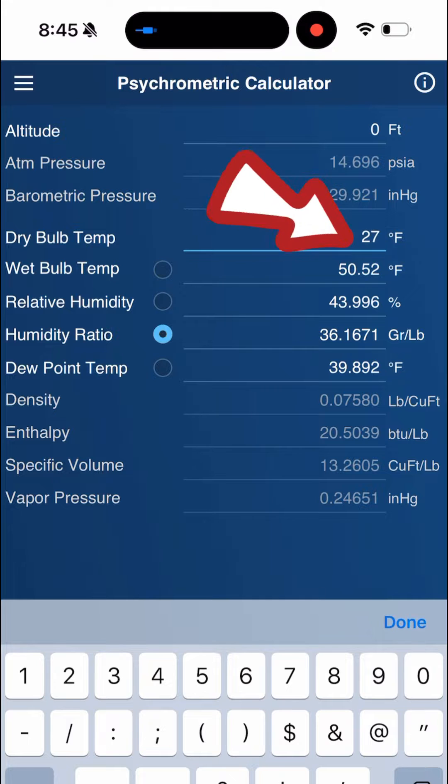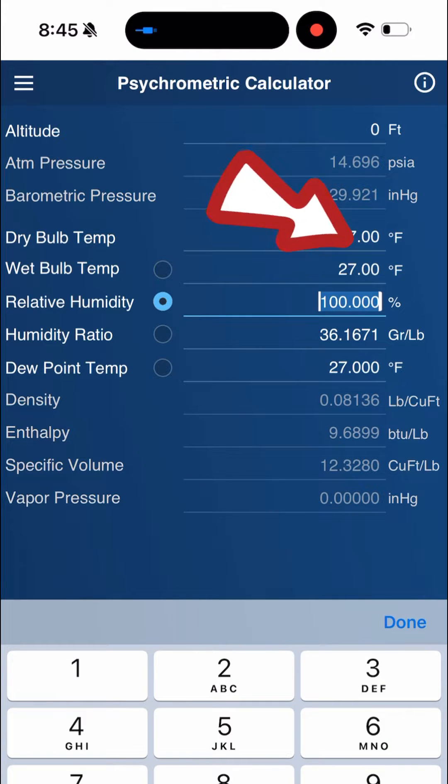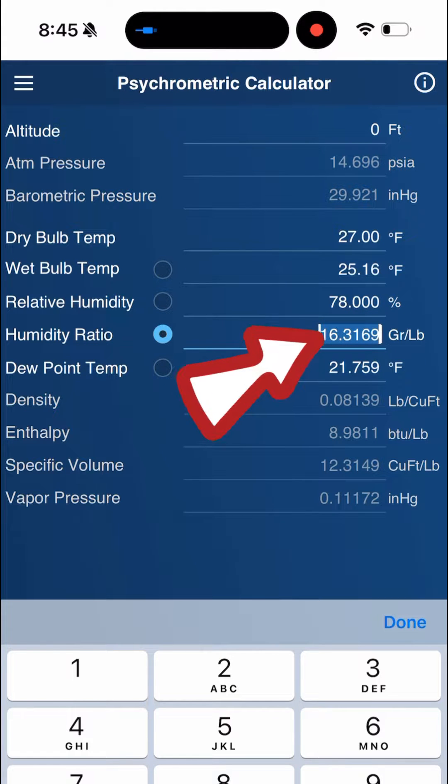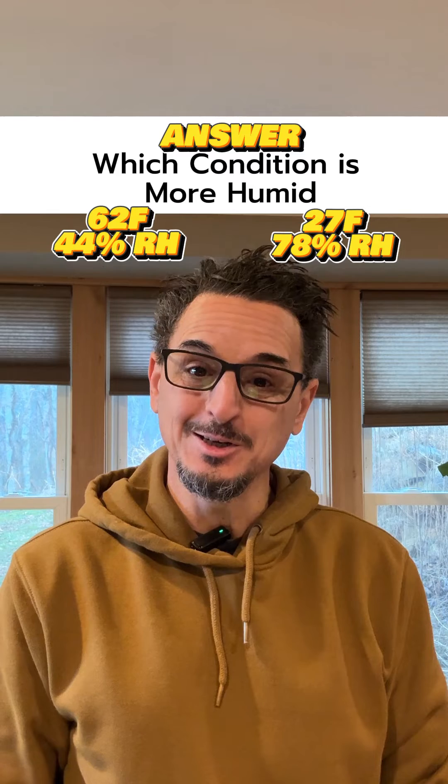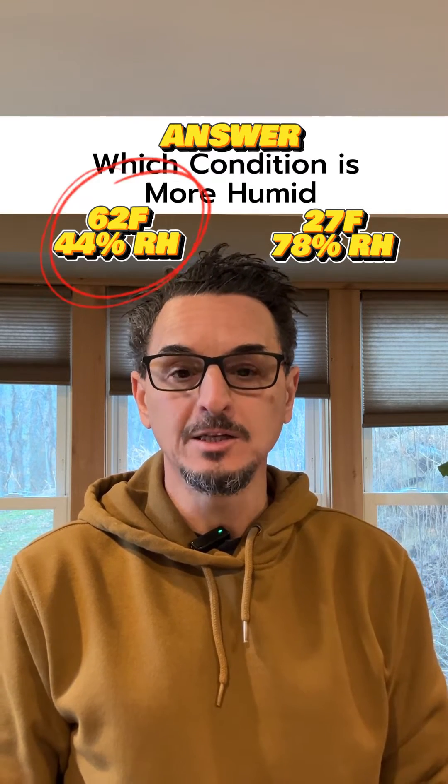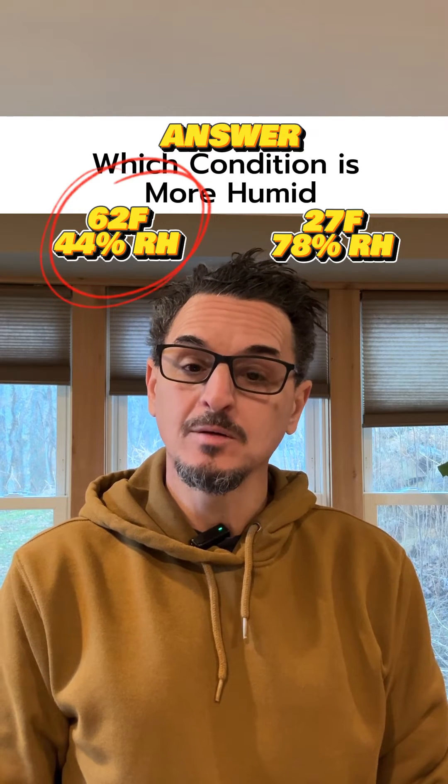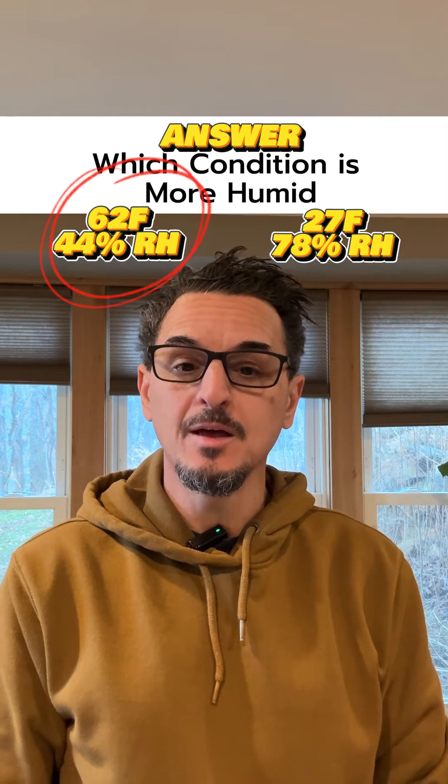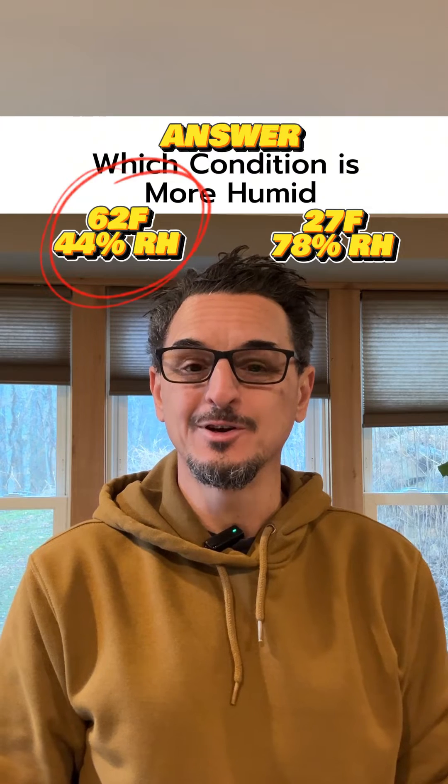Now we'll go to the second condition and plug in 27 dry bulb and 78% relative humidity, and you can see the grains are about 16. So the answer to the question is the indoor condition of 62 degrees and 44% relative humidity has more humidity. It is more humid than the outdoor air condition of 27 degrees.